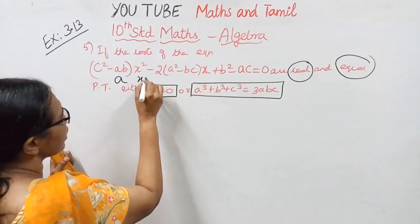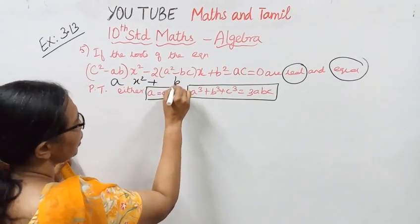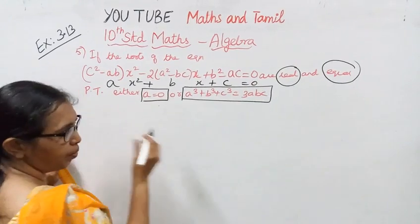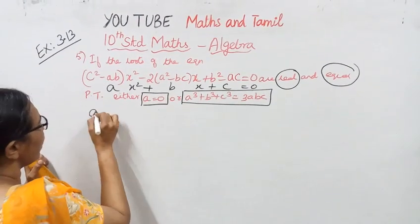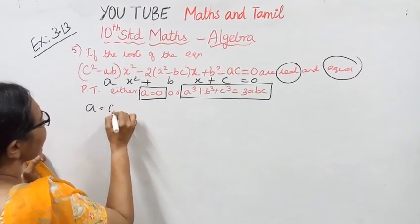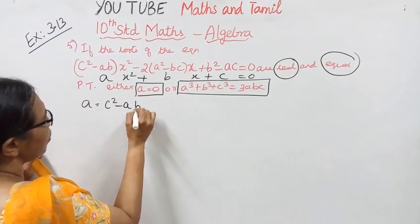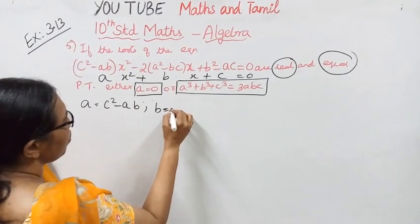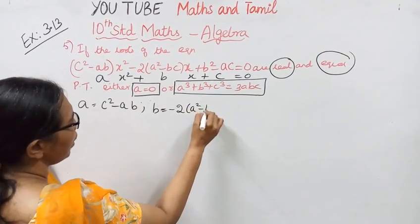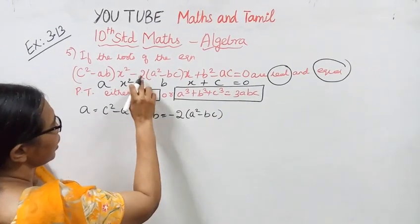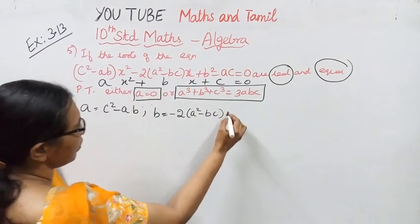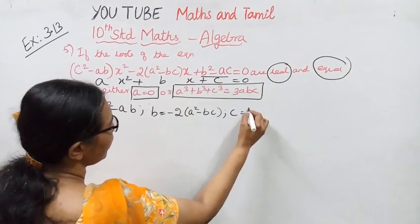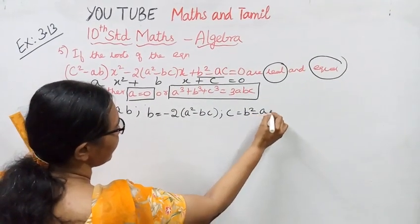We use the standard form ax² + bx + c = 0. Here, A = c² - ab, B = -2(a² - bc), and C = b² - bc. Identify the coefficients carefully.